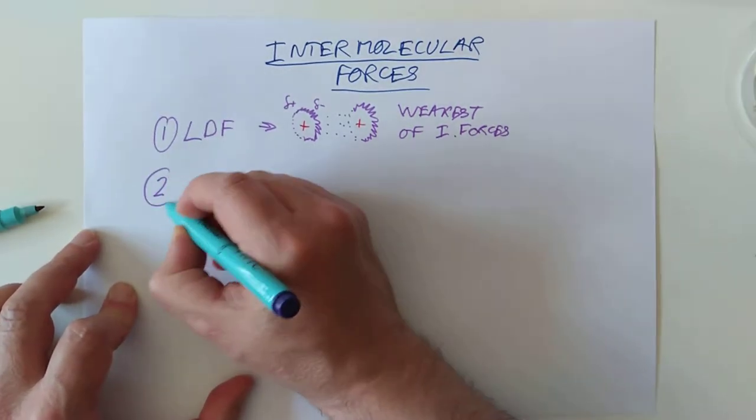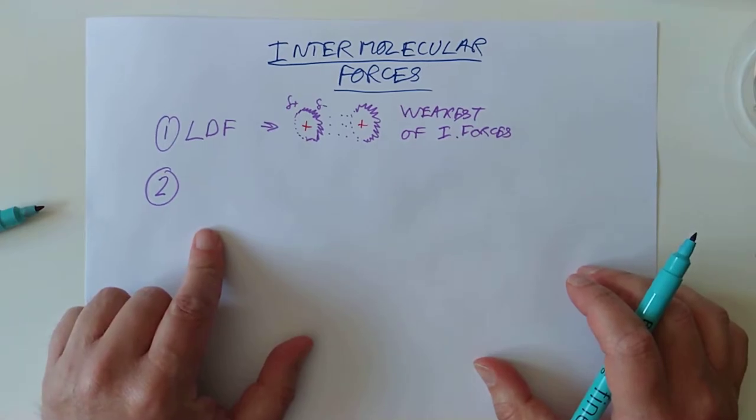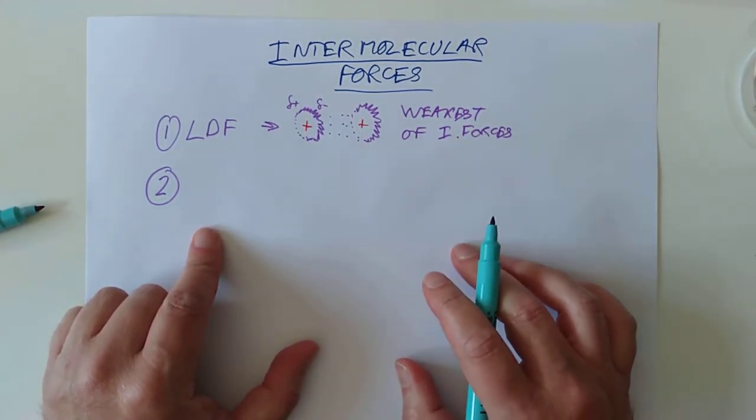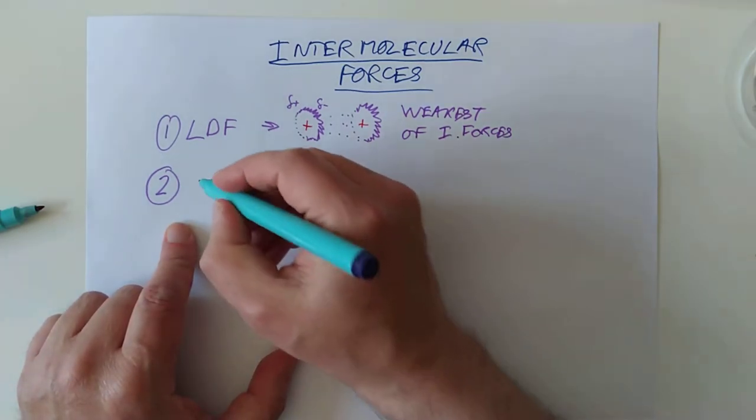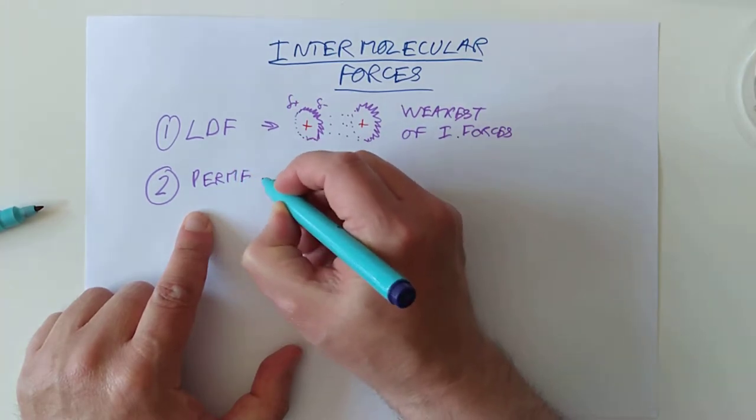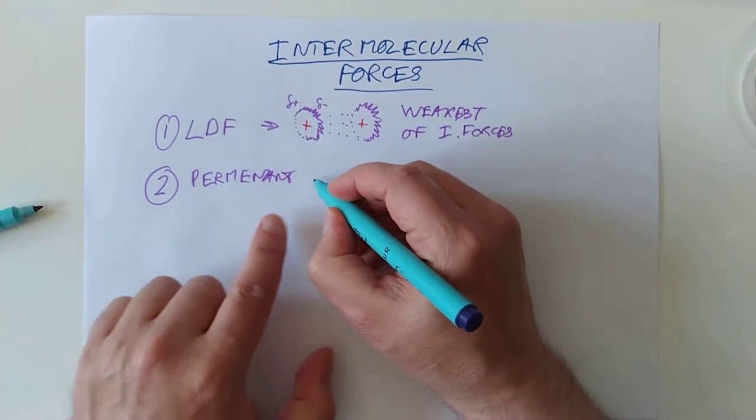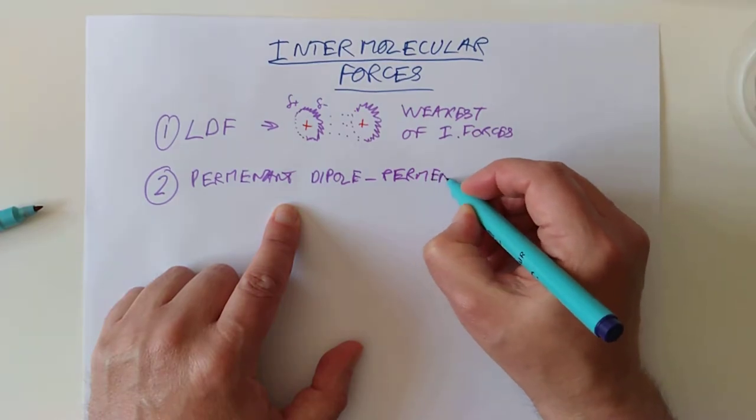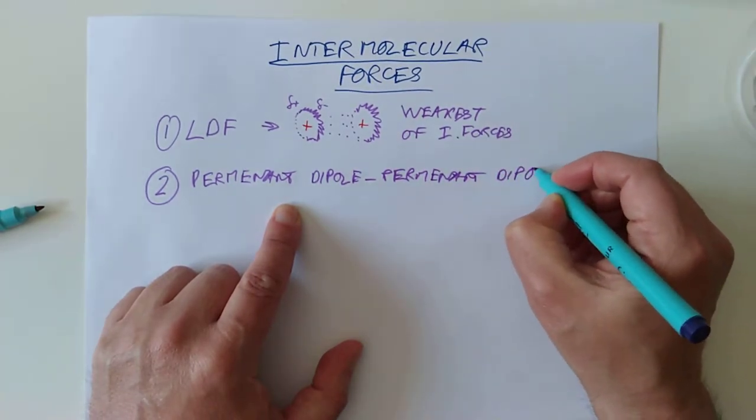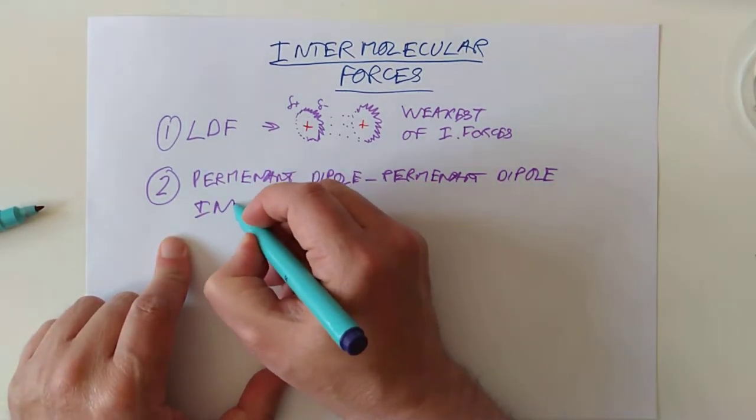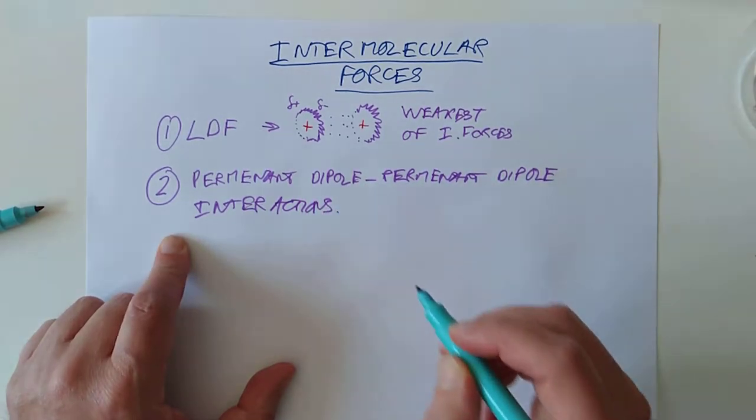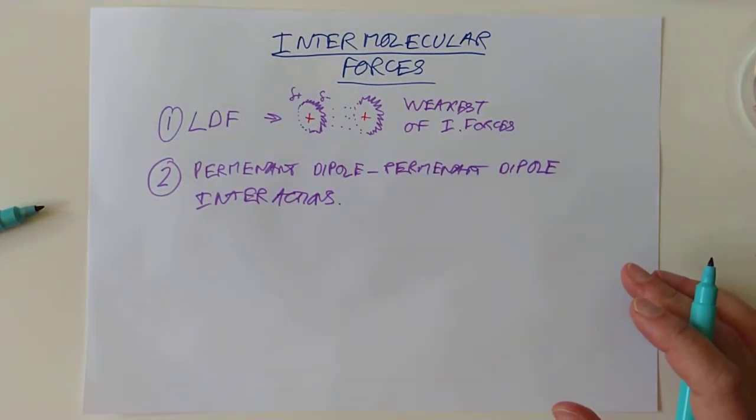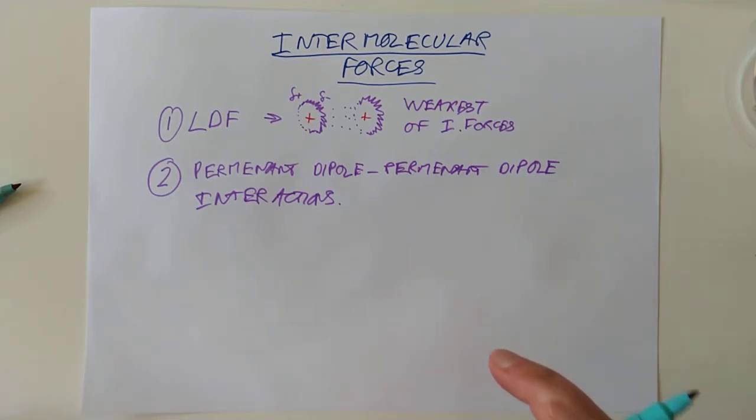Type number two. And we're going to have a look at, this is our first new type. The SQA has a bit of a mouthful for this. They call them permanent dipole to permanent dipole interactions. Now, these are what I was hinting about in the last video, where I said one of the consequences of having a polarised molecule is it finds itself attracted to its neighbour, also polarised molecule. And this raises the melting and boiling points.